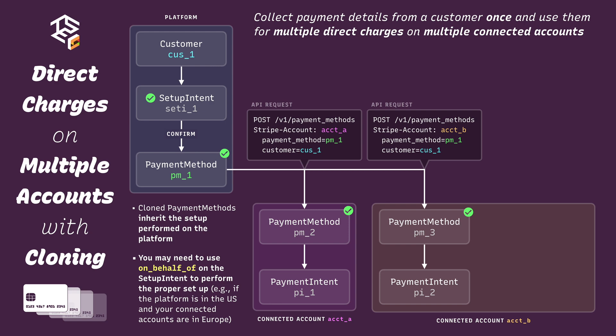Let's imagine now that we want to create a second direct charge on account B. You might be thinking we can reuse PM3 for that, but there are two reasons that won't work. First, we're not attaching the cloned payment methods on the connected accounts to customers, which means they can only be used once, and we've already used PM3 for a direct charge. Second, even if we did attach PM3 to a customer, if some time passed between the two direct charges on account B, PM3 might be out of date. You should think of the payment method on the platform as the canonical one. If the customer wants to update their payment method on file, such as providing a new expiration date for their card, you would update the payment method on the platform with those changes. That means PM3 wouldn't be up to date for the next direct charge unless you went to the trouble of keeping track of and updating every cloned copy of PM1 manually.